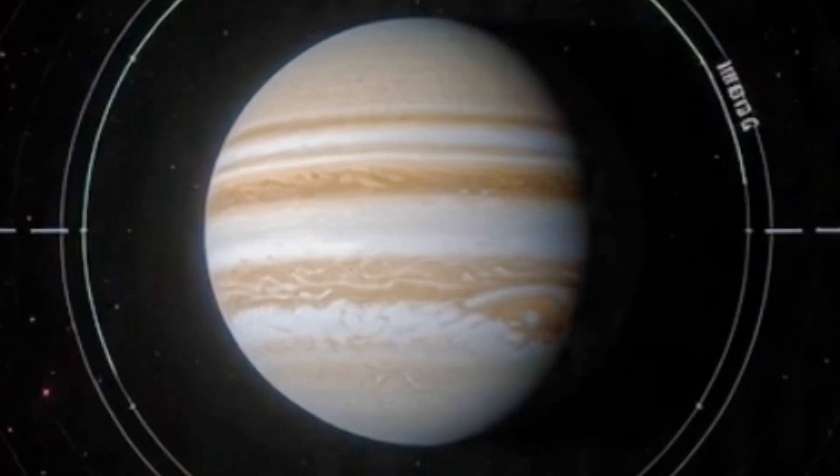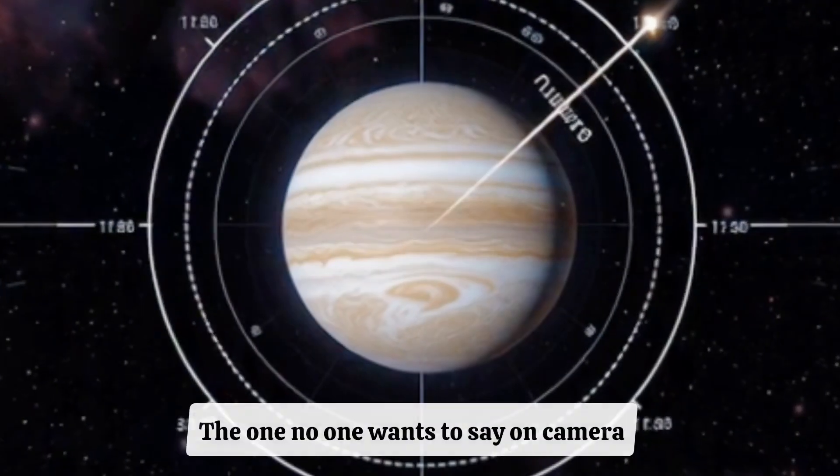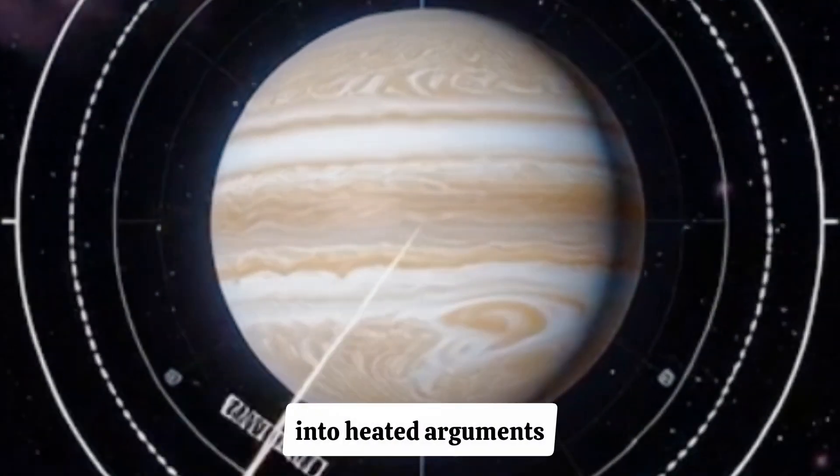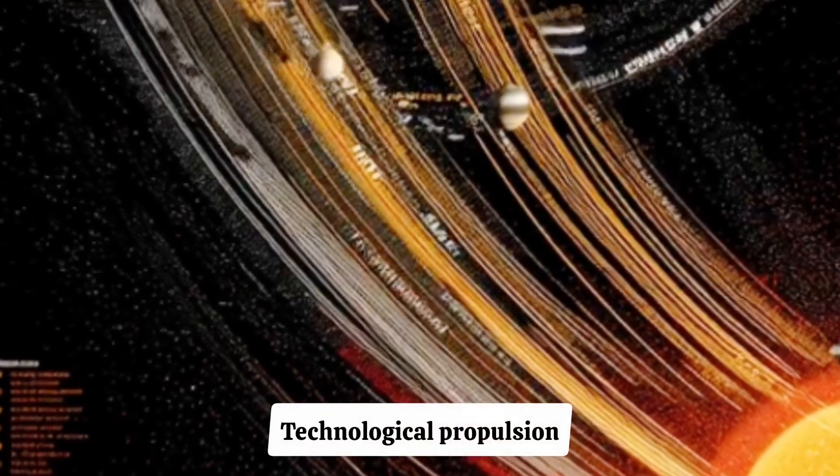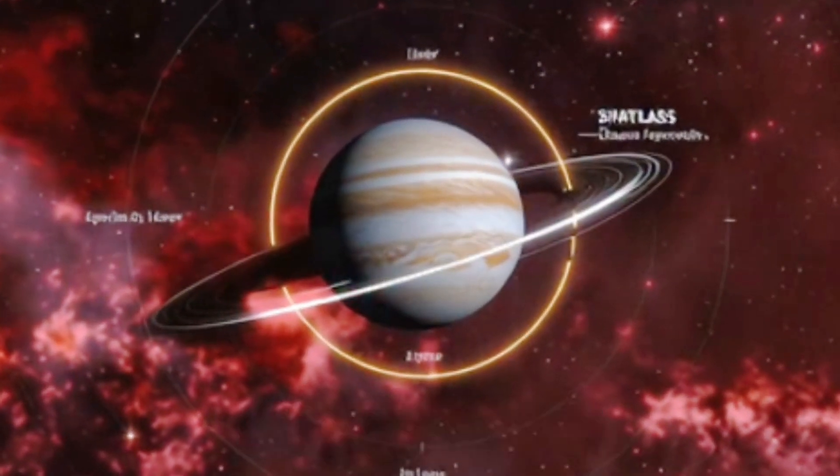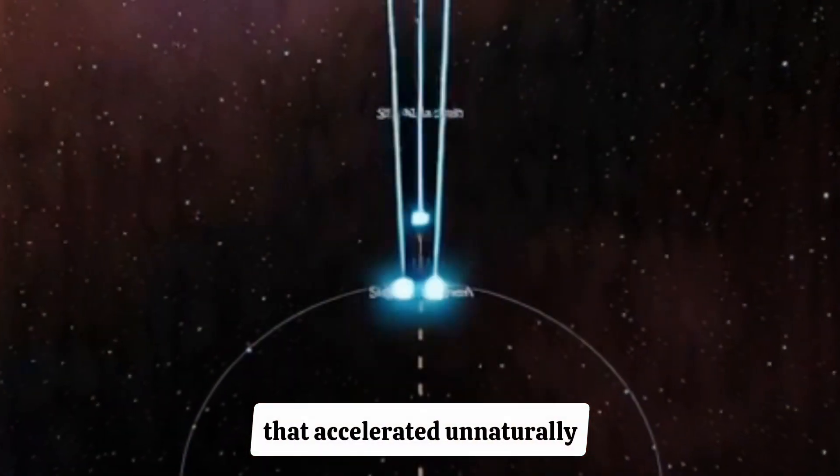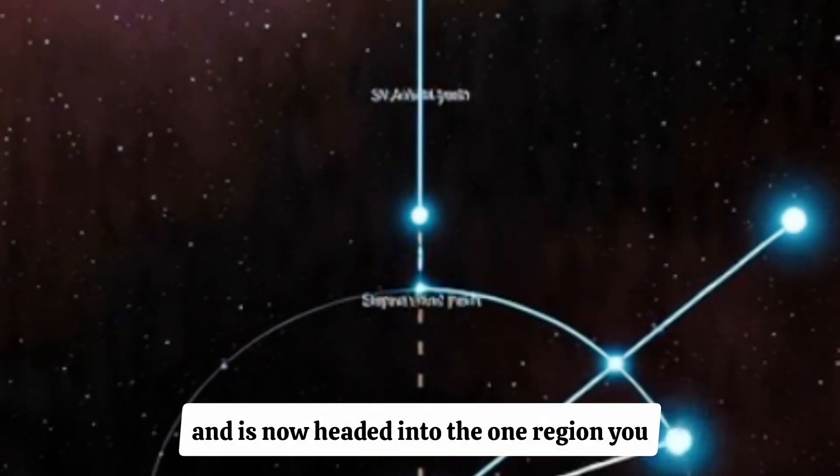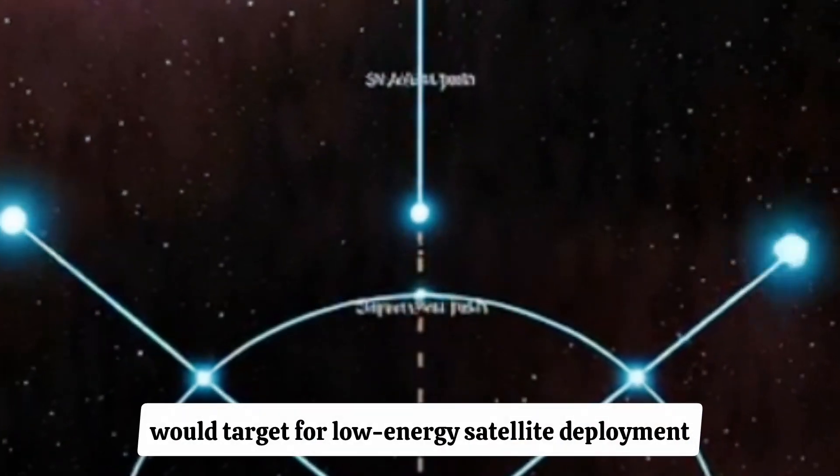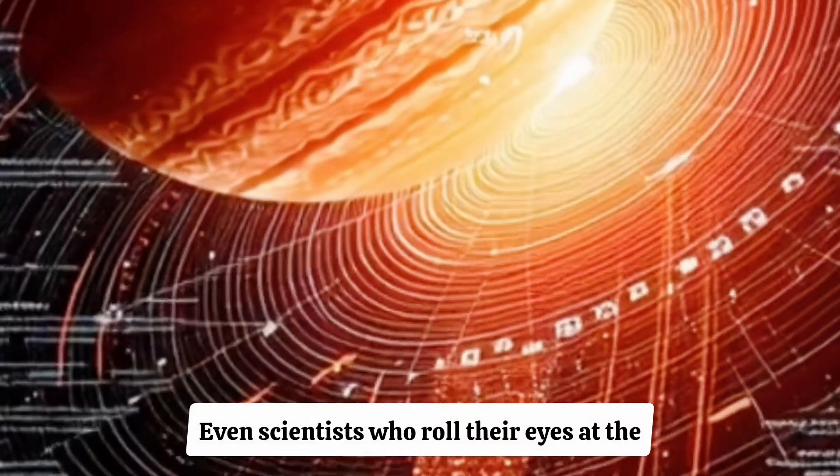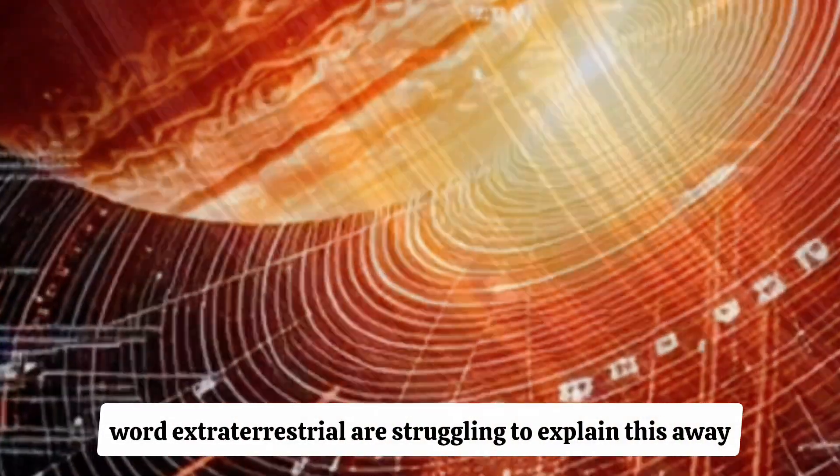And then we arrive at the fourth explanation. The one no one wants to say on camera. The one that turns calm academic debates into heated arguments. Artificial maneuvers. Technological propulsion. Intentional navigation. Look, no one is claiming a spaceship. No one is claiming aliens. No one is claiming intelligence. But the facts don't lie. We have an interstellar object that accelerated unnaturally, adjusted its path, and is now headed into the one region you would target for low-energy satellite deployment around the largest planet in our solar system. Even scientists who roll their eyes at the word extraterrestrial are struggling to explain this away.